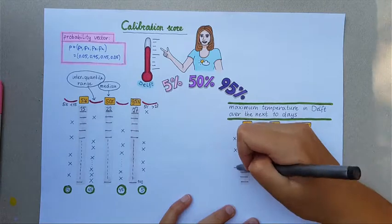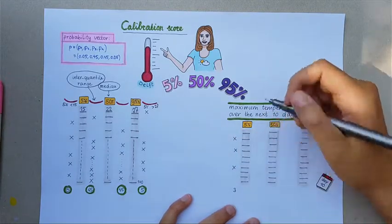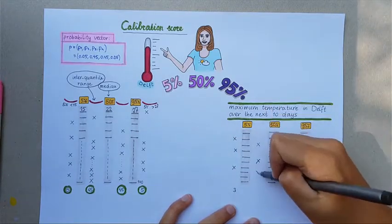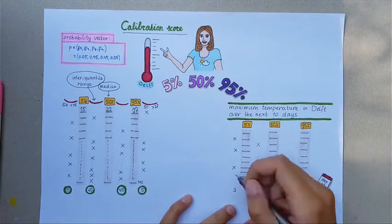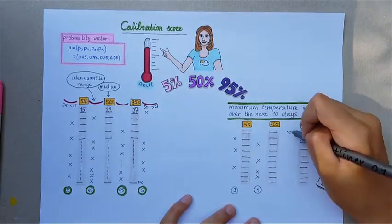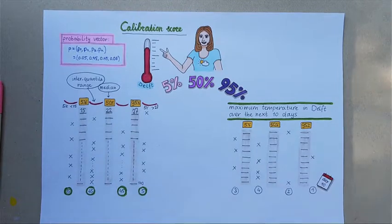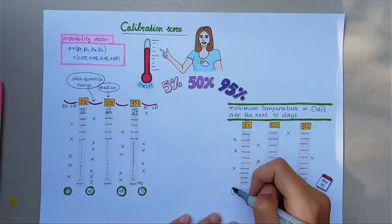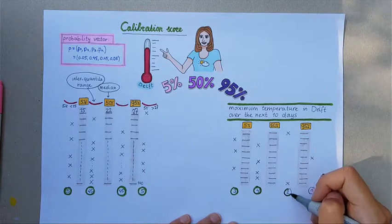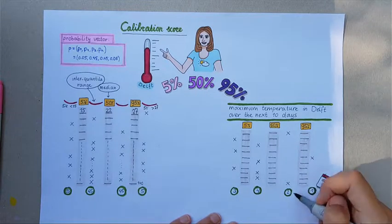In three out of 10 questions, the expert overestimated, while he underestimated in one question. Four questions had the realization between 5% and 50% quantiles, whereas two questions had the realization between the 50% and 95% quantile.